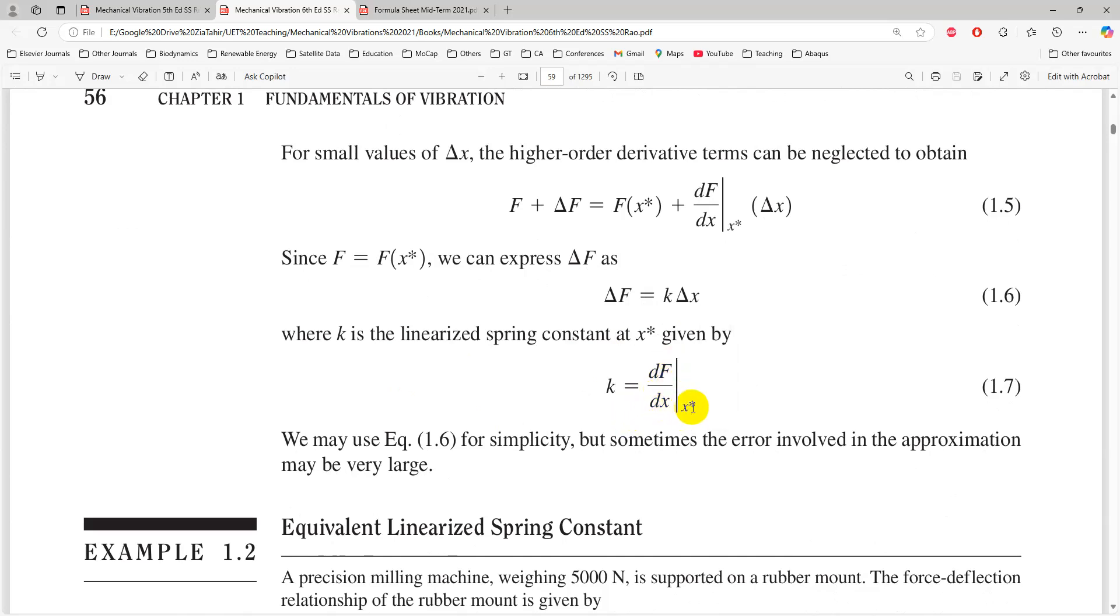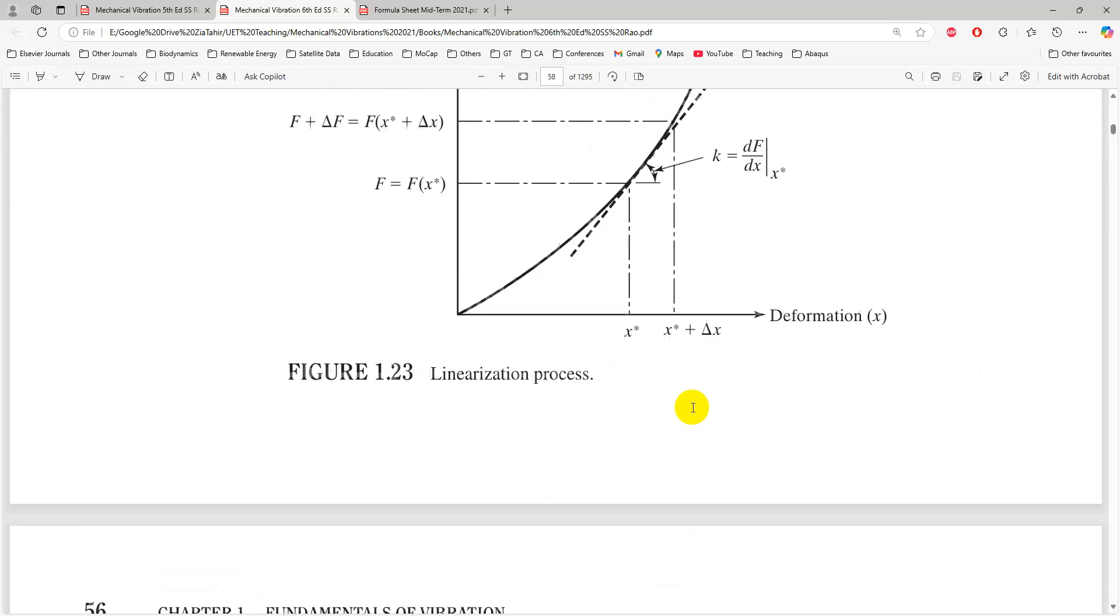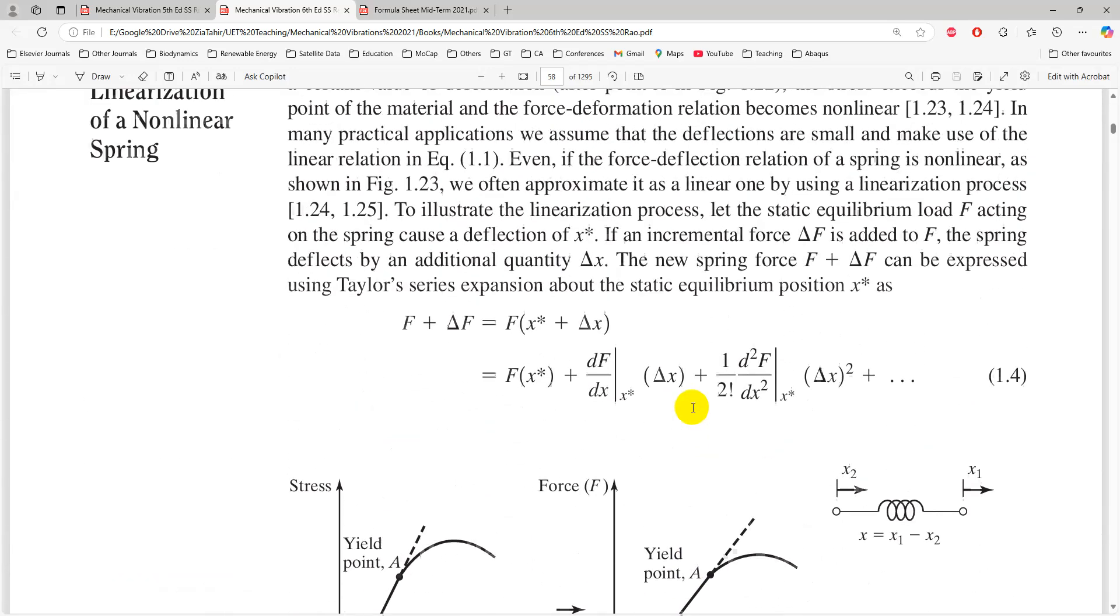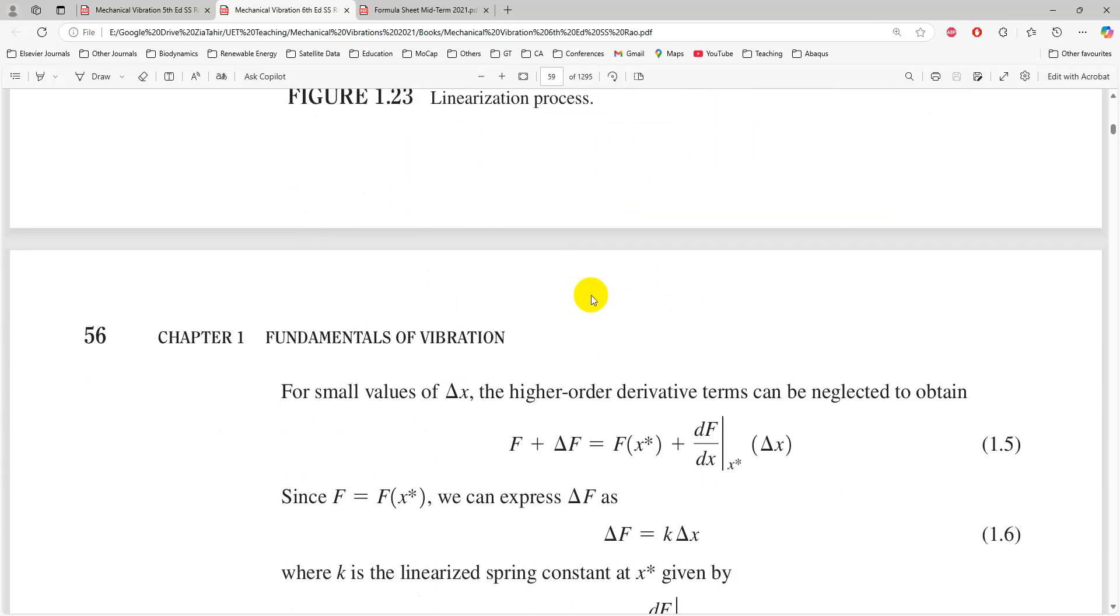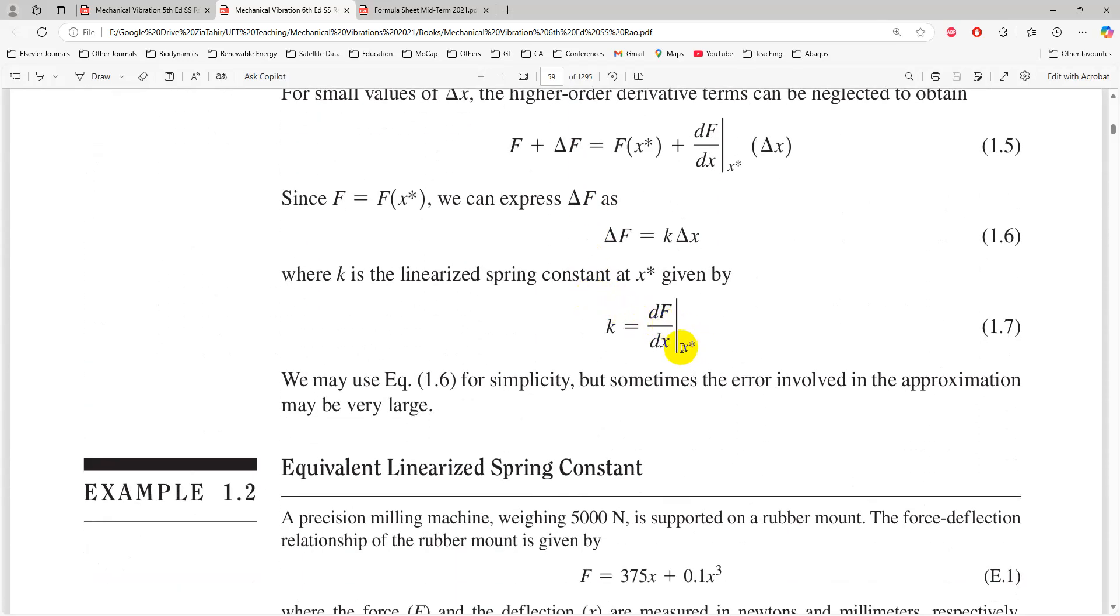Basically what we have to do is when a force relationship is given, we need to assume the static equilibrium deflection and then by substituting the value of f into the original equation, we need to first find the value of x*, and then we can find out stiffness of the linear spring by just differentiating the equation.